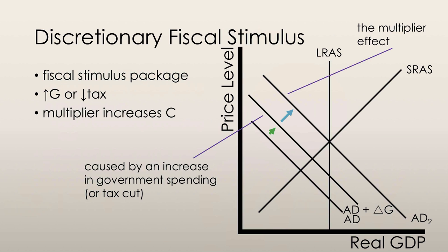Ideally, when a fiscal stimulus package is passed, an increase in expenditure aims to increase aggregate demand by the amount of the change in spending. The multiplier effect further increases aggregate demand, ideally until long-run macroeconomic equilibrium is reached.